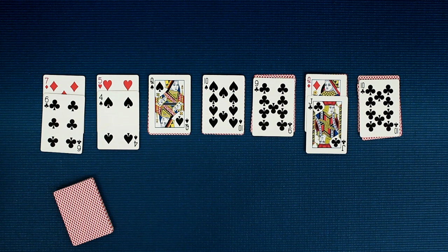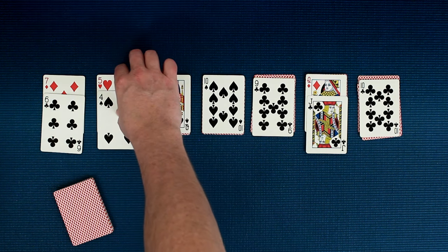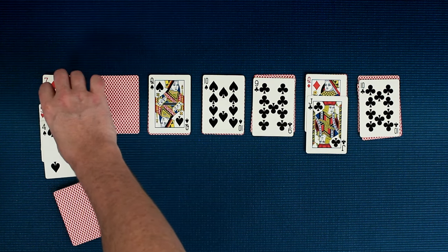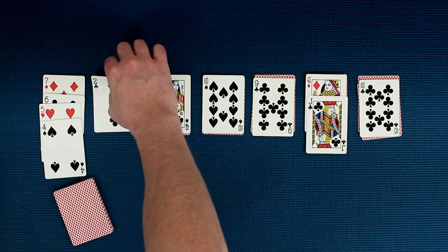If you move a card that has other cards underneath it, all the cards under it come along with it. So if I move this five of hearts here to this six, the four comes over with it.